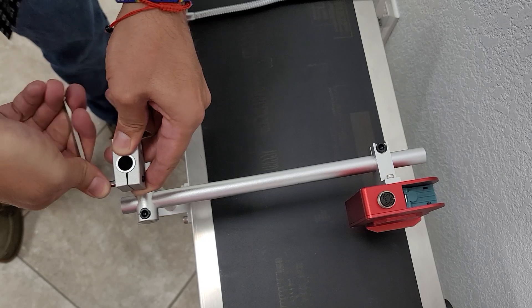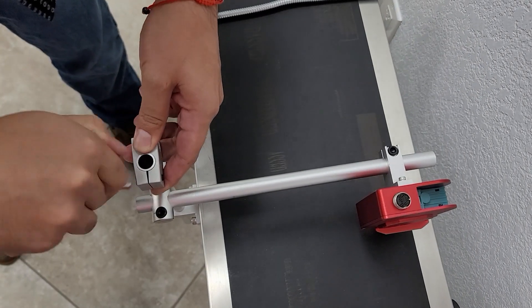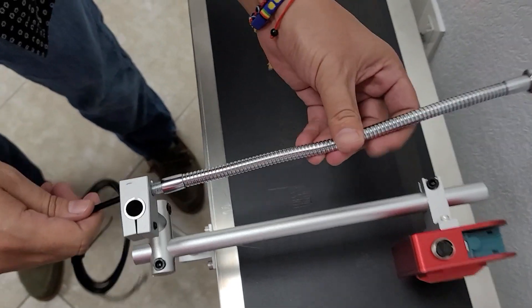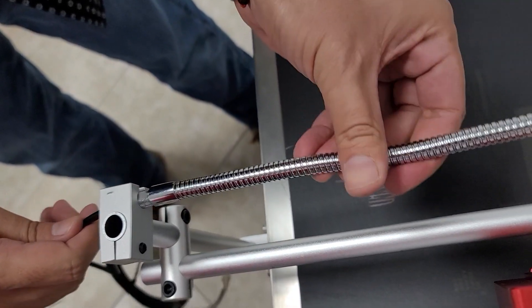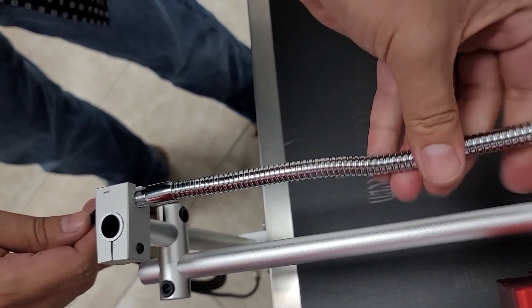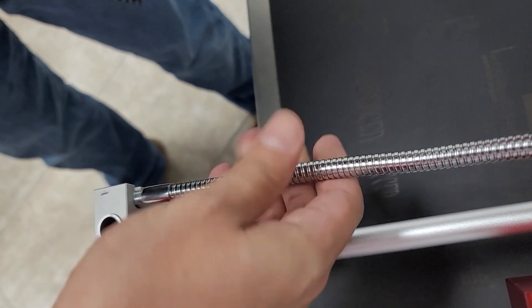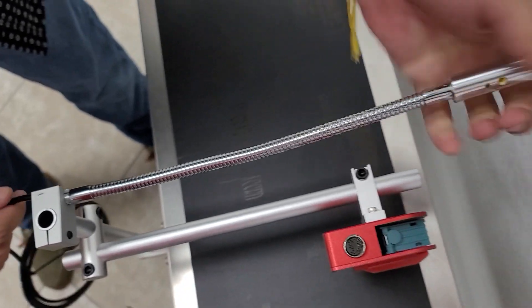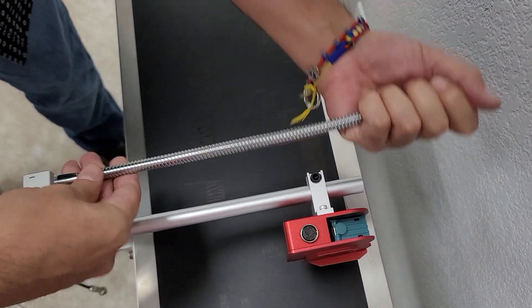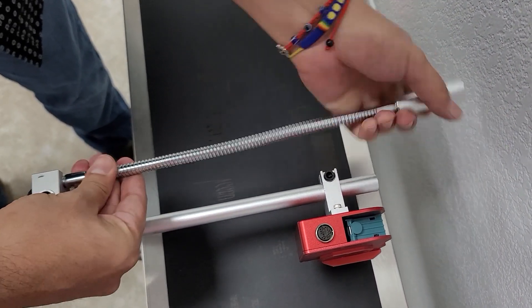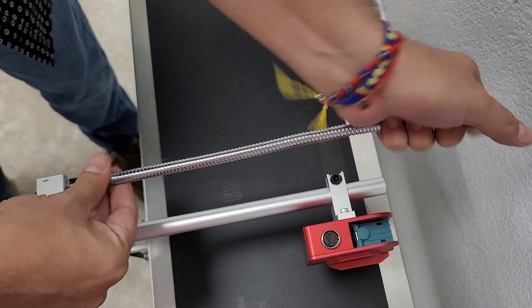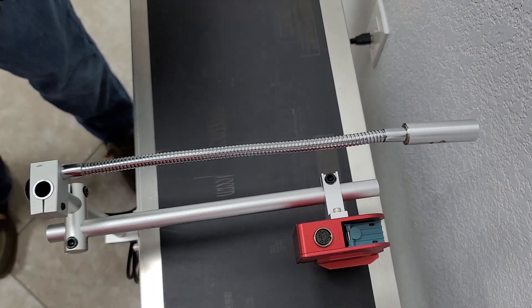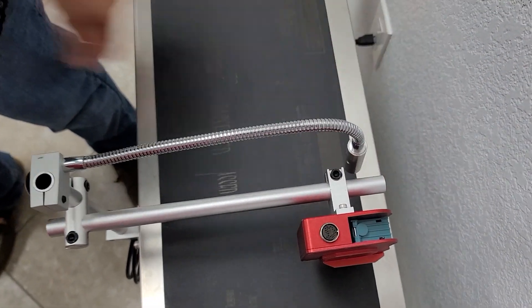Once we tighten this in place, we can go ahead and thread our sensor through. Make sure you spin the right way. And make sure it's secured tight, and then you can just position it in any position.